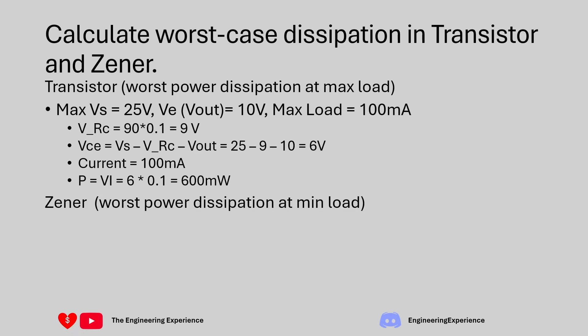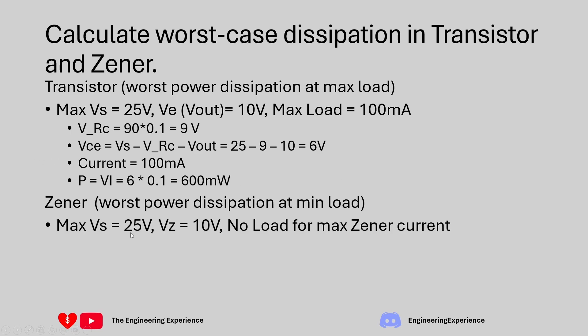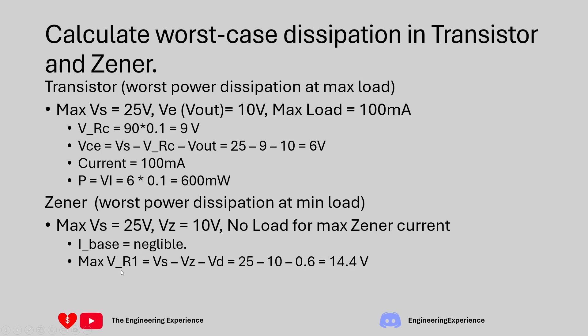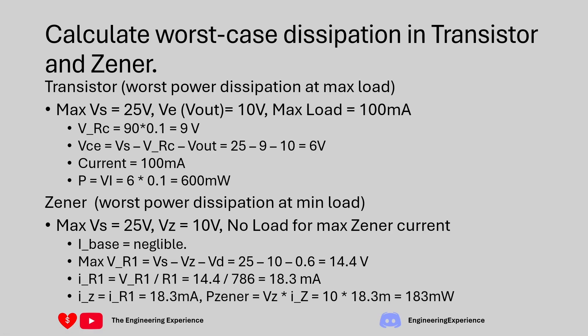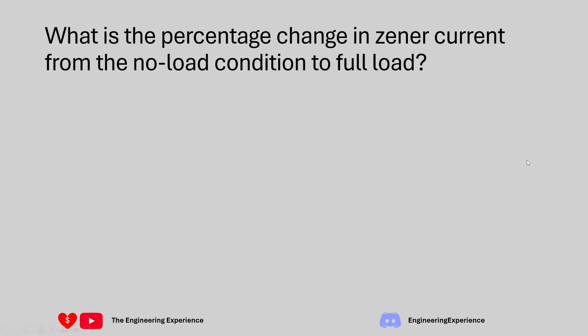The worst case power dissipation for the Zener is different - it occurs at minimum load, not maximum. We assume maximum power supply of 25 volts, Zener voltage of 10 volts, no load connected so load current is zero, and base current is negligible. The maximum voltage on R1 is the supply minus Zener voltage minus diode voltage: 25 minus 10 minus 0.6 equals 14.4 volts. Using Ohm's law, 14.4 divided by 786 ohms gives 18.3 milliamps through R1. Since there's no base current, all of that flows through the Zener, giving a maximum Zener power dissipation of 10 volts times 18.3 milliamps equals 183 milliwatts.